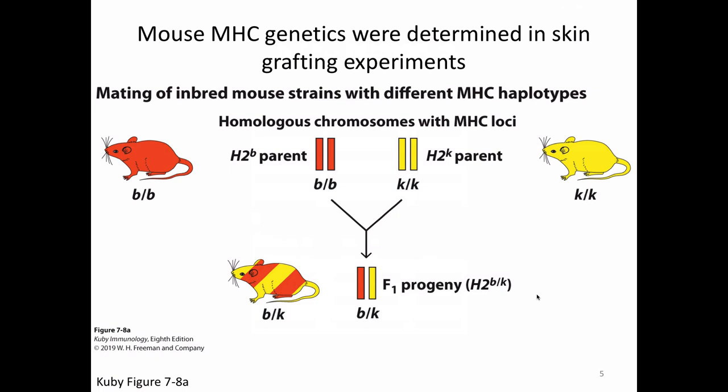I have a friend who whenever I start talking about this says, 'So the major incomprehensibility complex, right?' — because he finds this nomenclature a little nutty. In mouse, we had parents that were inbred strains. One parent has two chromosomes labeled B and is orange; another has two copies of chromosome K and is yellow. A progeny mouse has one copy of the B chromosome and one copy of the K chromosome — both orange and yellow.